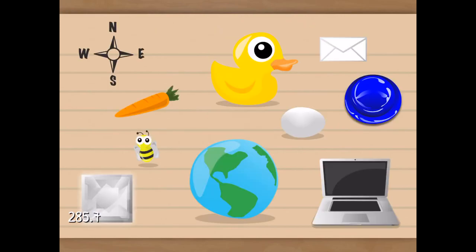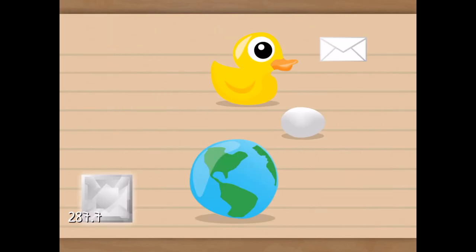But I've memorized it. The blue button. Carrot. Yes, I said thing. Diamond. Duck. Egg. Envelope. Earth. Egg or envelope. Egg. Envelope. Touch the up arrow.